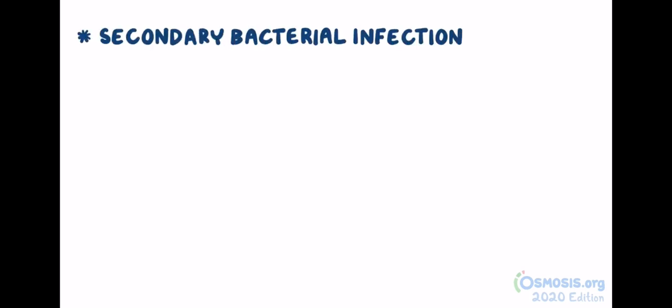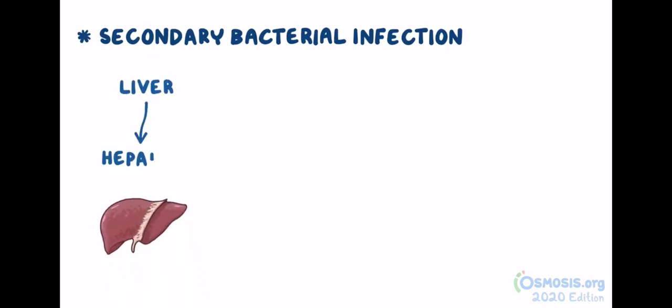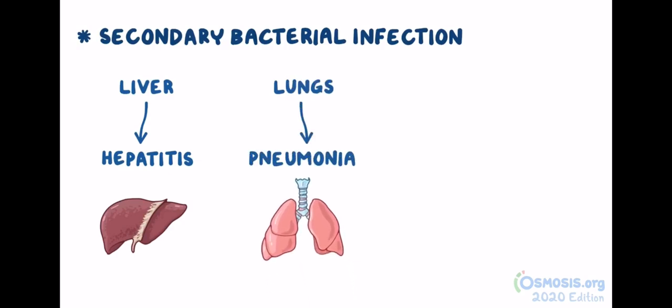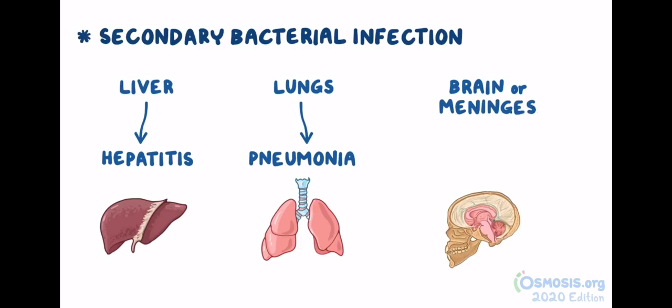With both chickenpox and shingles, the most common complication is a secondary bacterial infection of the skin lesions. If the liver becomes infected, hepatitis can occur. If the virus spreads to the lungs, we get pneumonia. If the brain or its protective membrane, called the meninges, become infected, encephalomeningitis could occur.